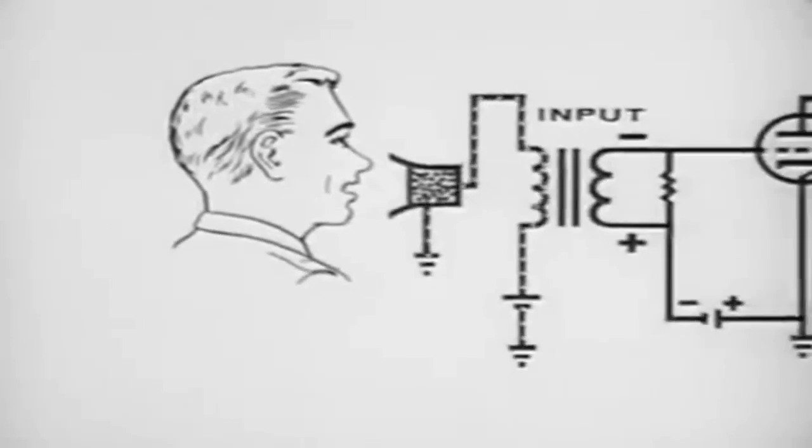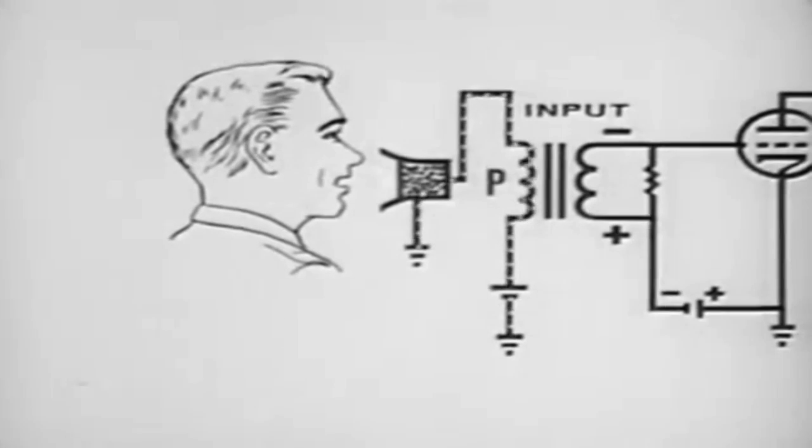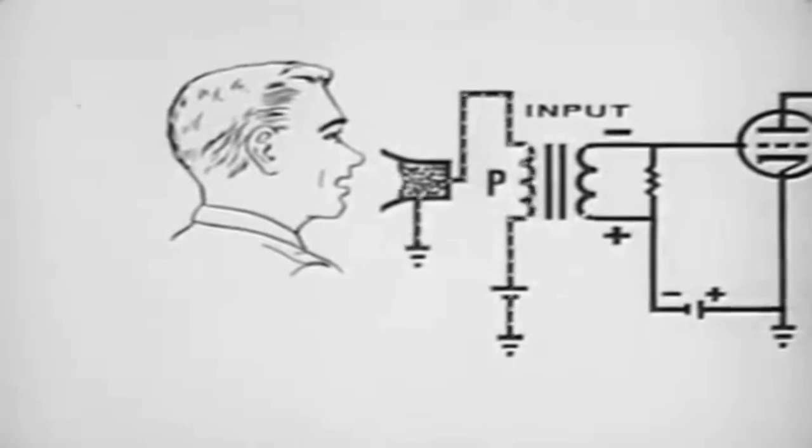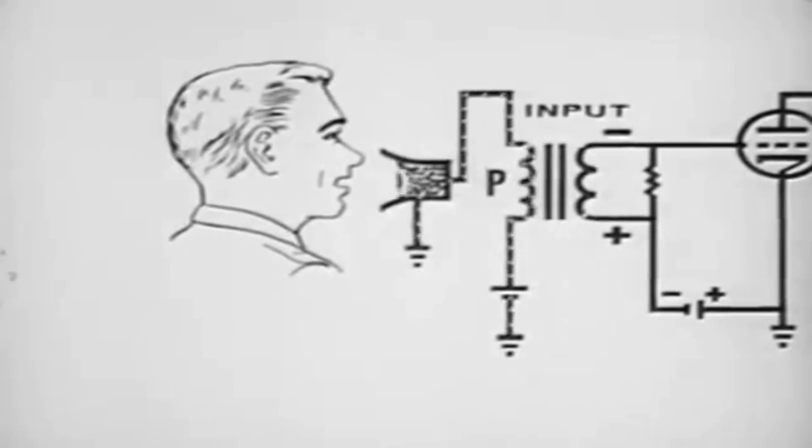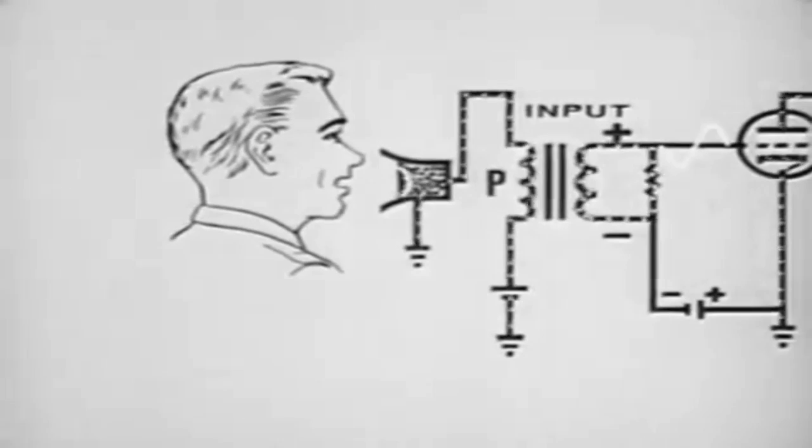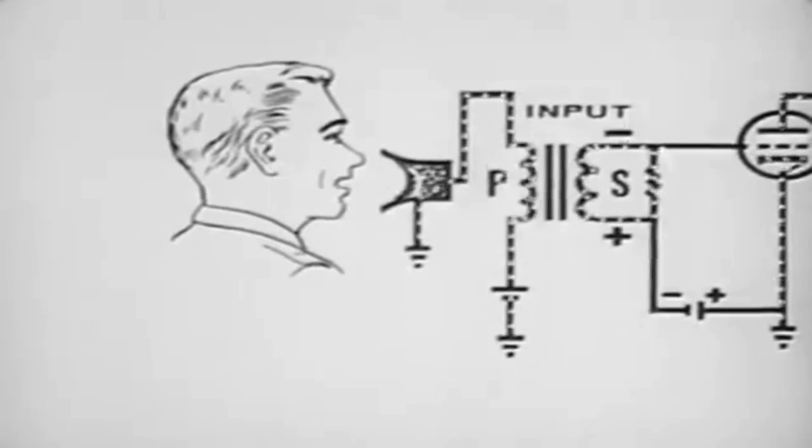The changing current in passing through the primary of a transformer sets up a changing magnetic field which induces a voltage into the secondary. This electrical energy must be amplified before it can be reconverted into sound.